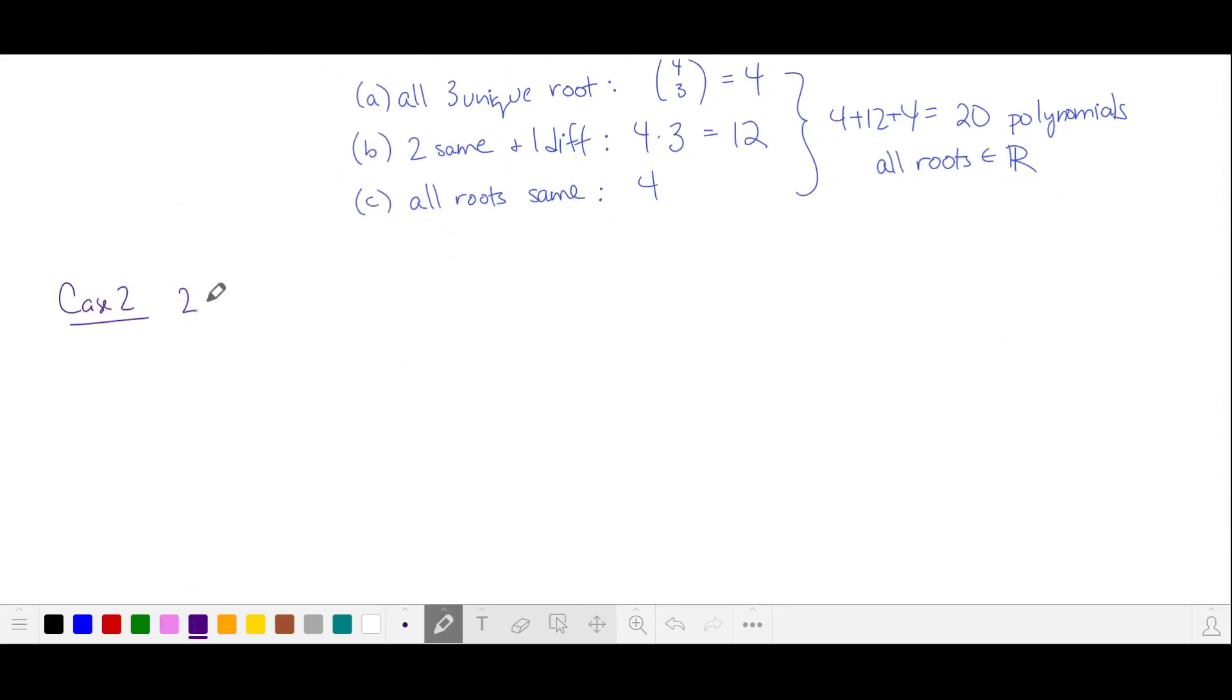The other case that we can have is if two solutions are not real, that is they're in the complex plane, and then the one remaining solution is real. If we have one solution that's complex, then its conjugate must also be a root. And then we'll let our third solution z3 be a real root. Let's call it k.